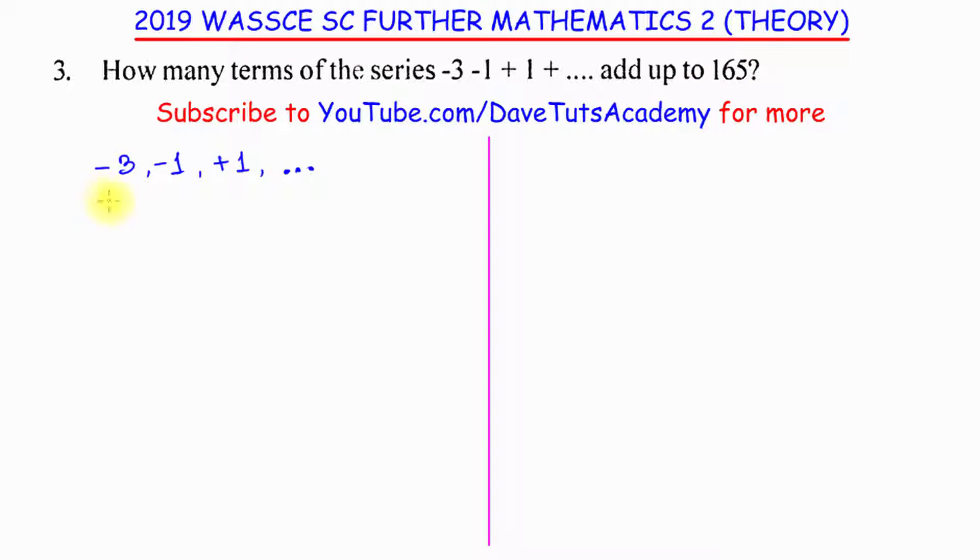There are some things we can observe from here, like the first term A. This is the very first term, it's minus 3, so A is minus 3.